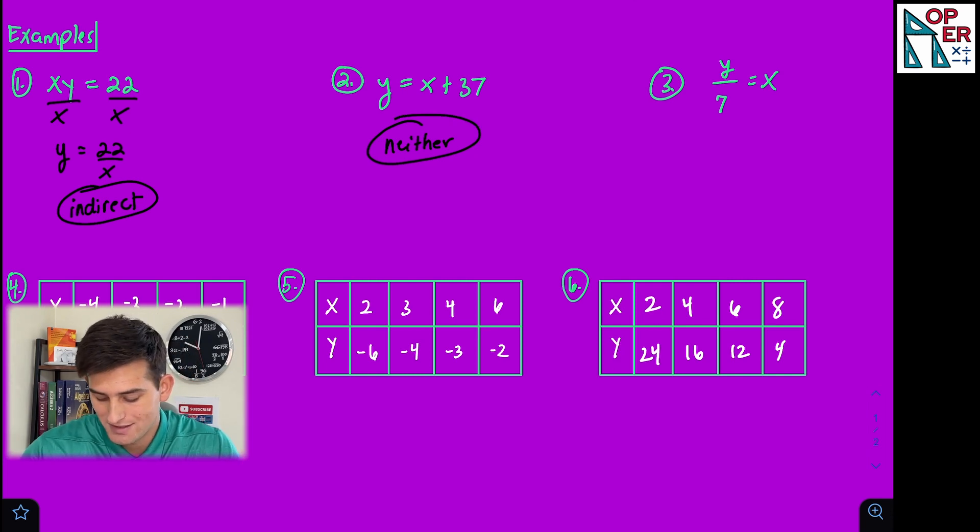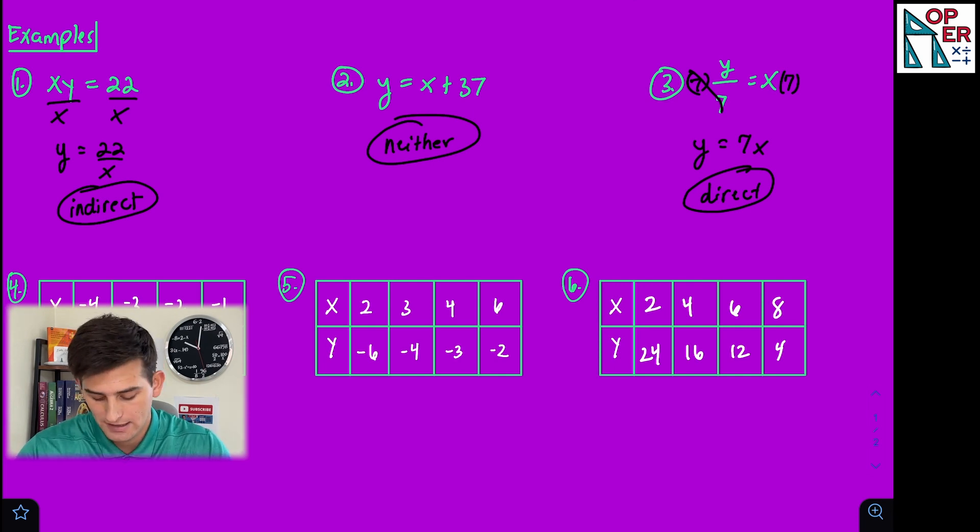Number three, we have y divided by seven equals x. We could multiply both sides by seven, and we get y equals seven times x. That would be our example of direct variation, because we have multiplication happening between a, which is seven, and x.